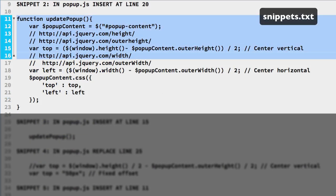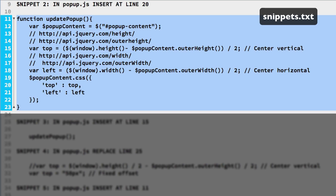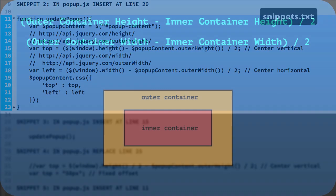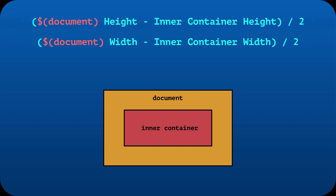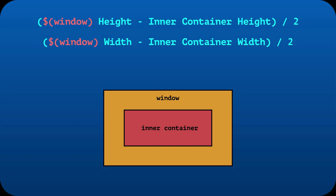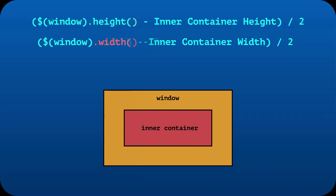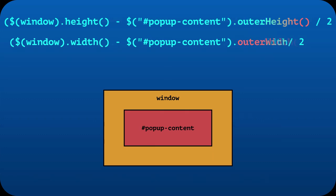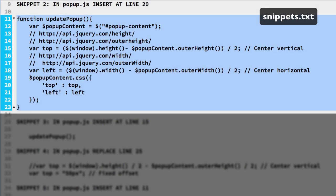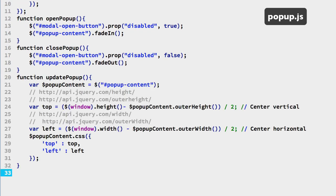We will use a function to set where the popup appears. Snippet 2 has the function — its code centers the popup vertically and horizontally using centering formulas that compute the top and left positions respectively. For the outer container we are using the window object — it relates to the viewing area regardless of what is in the page. To get the window height we use the jQuery height method, and the jQuery width method for the width. The inner container is our popup div element. Instead of the height method, we are using the outer height jQuery method — it includes both top and bottom padding and border thickness. And the jQuery outer width method does the same for getting the width. Paste the function at the end of the popup.js file.